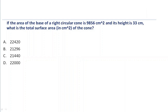If the area of the base of a right circular cone is 9856 cm² and its height is 33 cm, what will be the total surface area of the cone? The question is asking for total surface area, and the clue points given are the area of the base of the right circular cone and the height value.